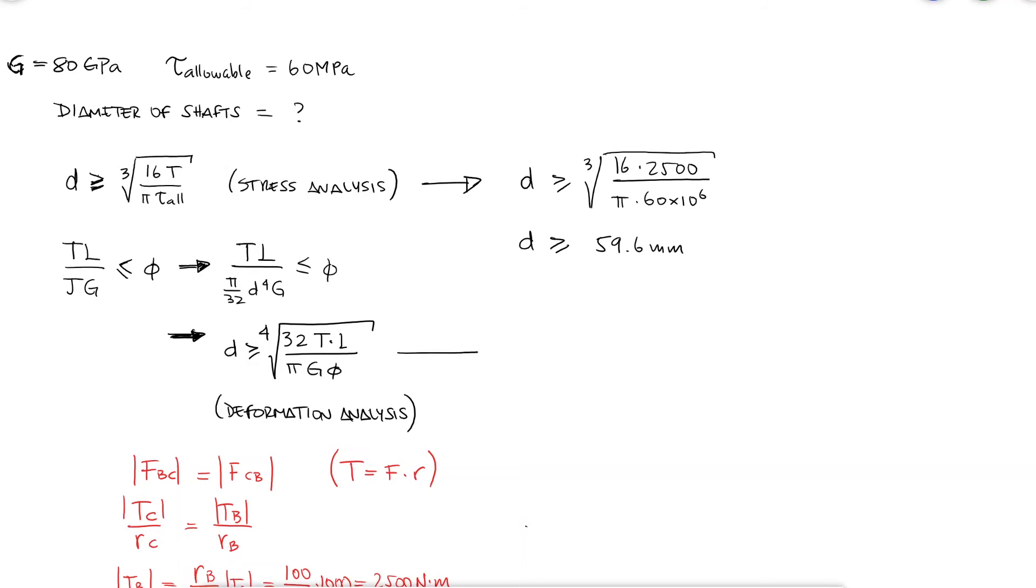And since the other restriction depends on the angle of twist of B with respect to A, which in radians is 0.0174, we find that the diameter should be at least 52 mm.